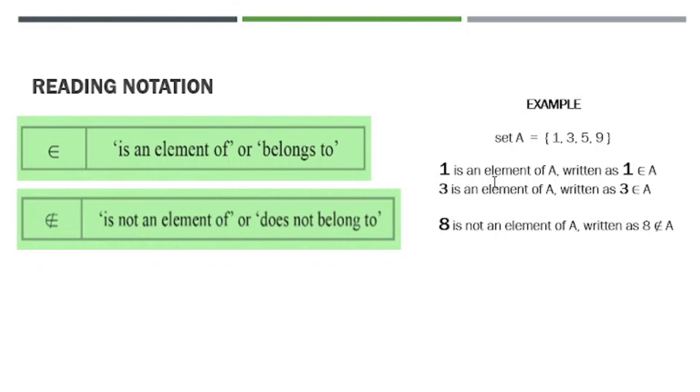How about 3? You can see here A has the element 3, so therefore 3 is an element of A. And if we write down this statement into mathematical form, this is how it looks: 3, then the symbol is an element of or belongs to, then A. This mathematical composition means 3 is an element of A.